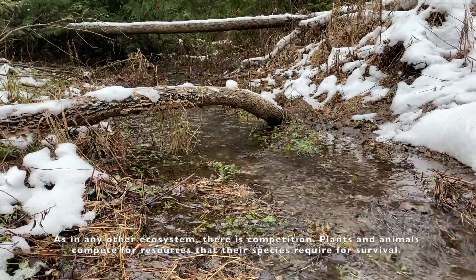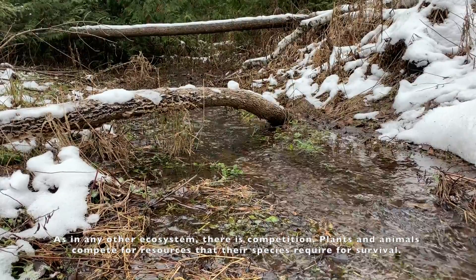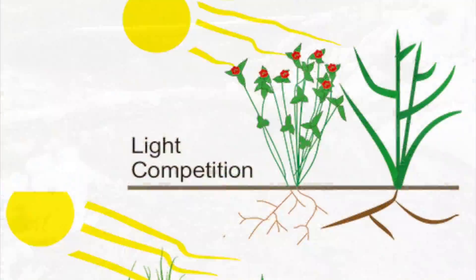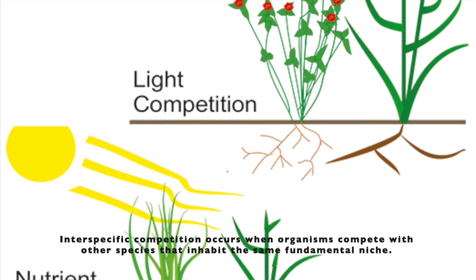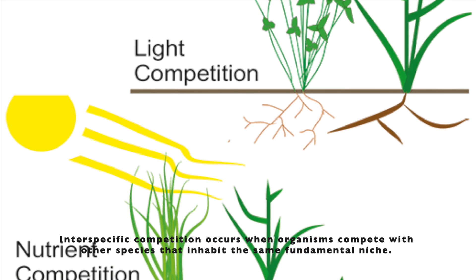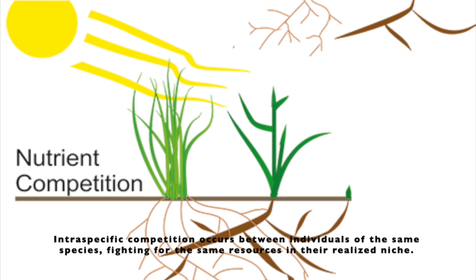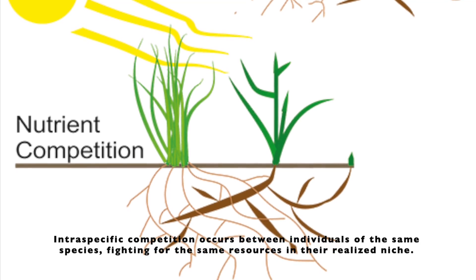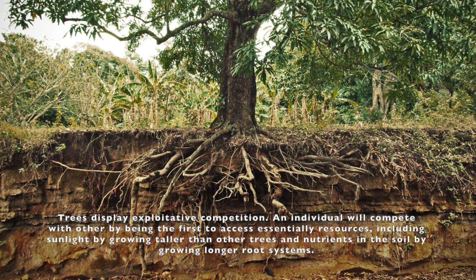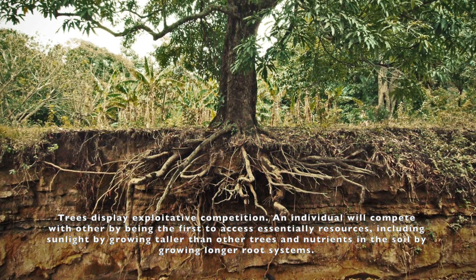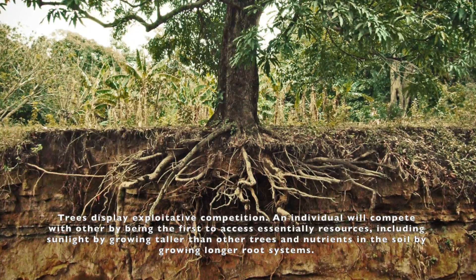As in any other ecosystem, there is competition. Plants and animals compete for resources that their species require for survival. Interspecific competition occurs when organisms compete with other species that inhabit the same fundamental niche. Intraspecific competition occurs between individuals of the same species fighting for the same resources in their realized niche. Trees display exploitative competition — an individual will compete with others by being the first to access essential resources including sunlight by growing taller, and nutrients in the soil by growing longer root systems.